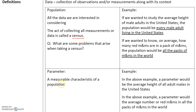A parameter is a measurable characteristic of a population. In the height example, a parameter would be the average height of all adult males in the United States. In the M&M example, a parameter would be the average number of red M&Ms in all packs of M&Ms in the world. Population starts with a P, and parameter starts with a P — a parameter is a measurable characteristic of a population. That's one easy way to remember.